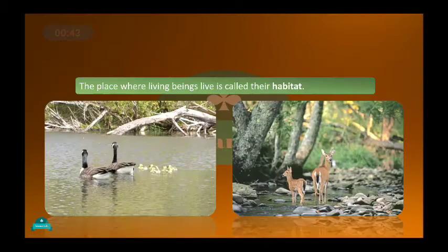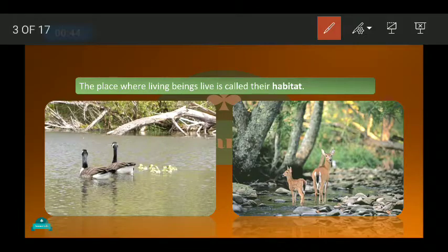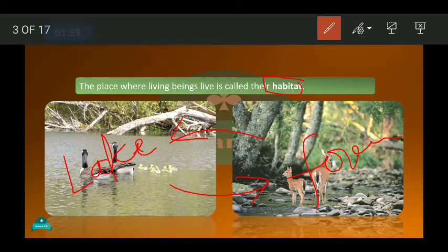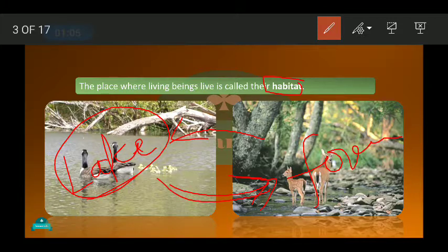We learned about what a habitat is — the place where living beings live is called the habitat. We compared two habitats, like the lake habitat with the forest habitat. We saw that animals and living organisms found in a lake cannot survive in a forest, and forest animals or plants cannot live in a lake.